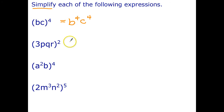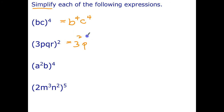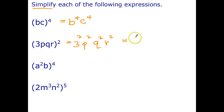Let's try the next one. It doesn't matter if we have two factors or four factors — the rule still applies. So 3pqr all to the power of 2 can be written as 3 squared times p squared times q squared times r squared. The 3 squared can then be simplified to 9, giving us 9p squared q squared r squared.